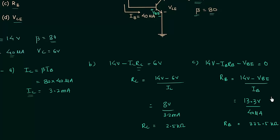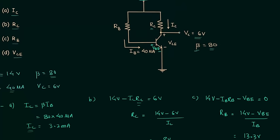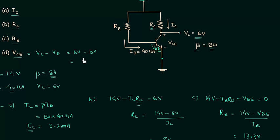The last part is the output voltage Vce. Vce equals Vc minus Ve, where Vc is the potential at point C and Ve is the potential at point E. Vc equals 6 volts and Ve equals 0 volts because it is connected to ground. Therefore Vce equals 6 volts.